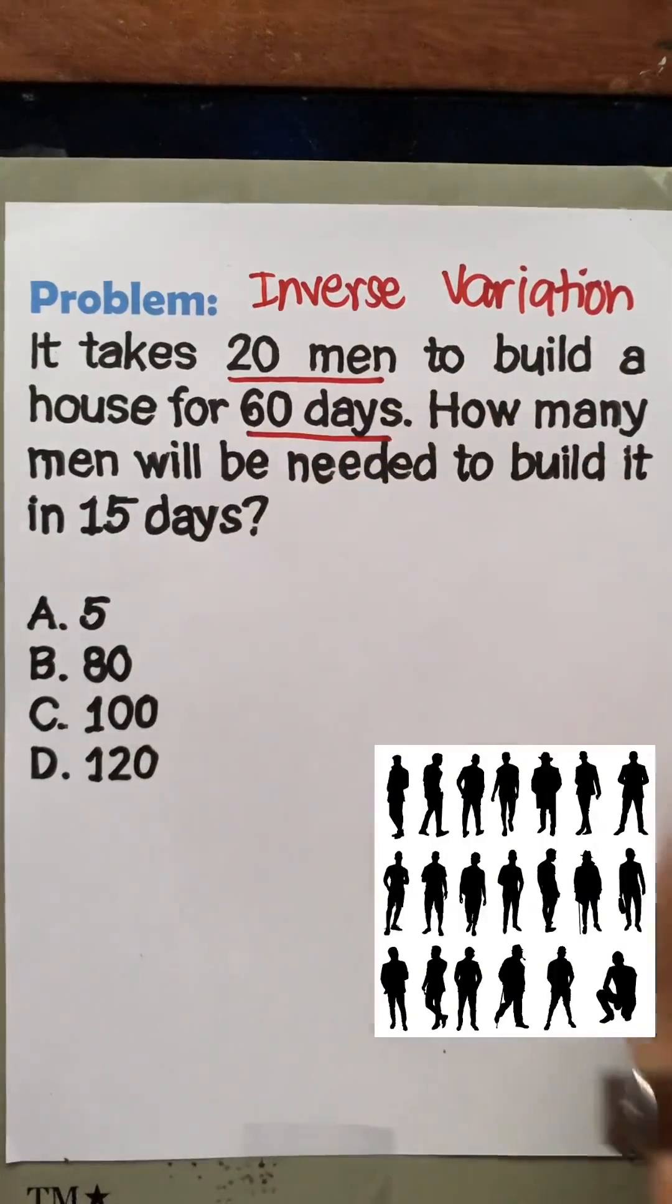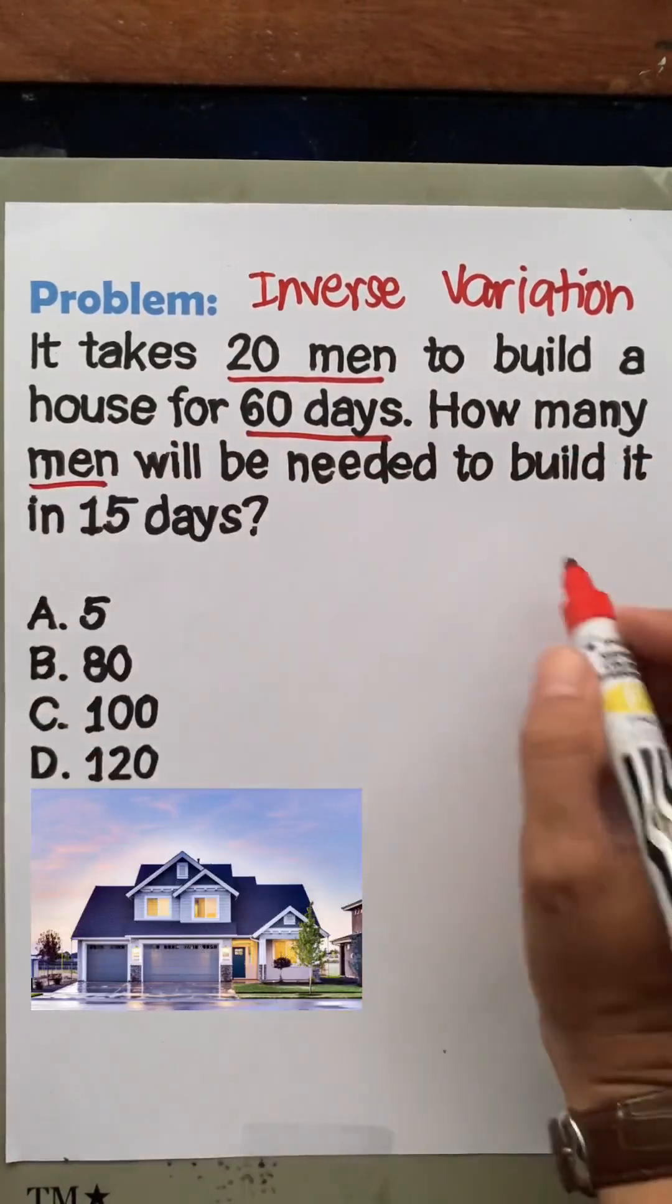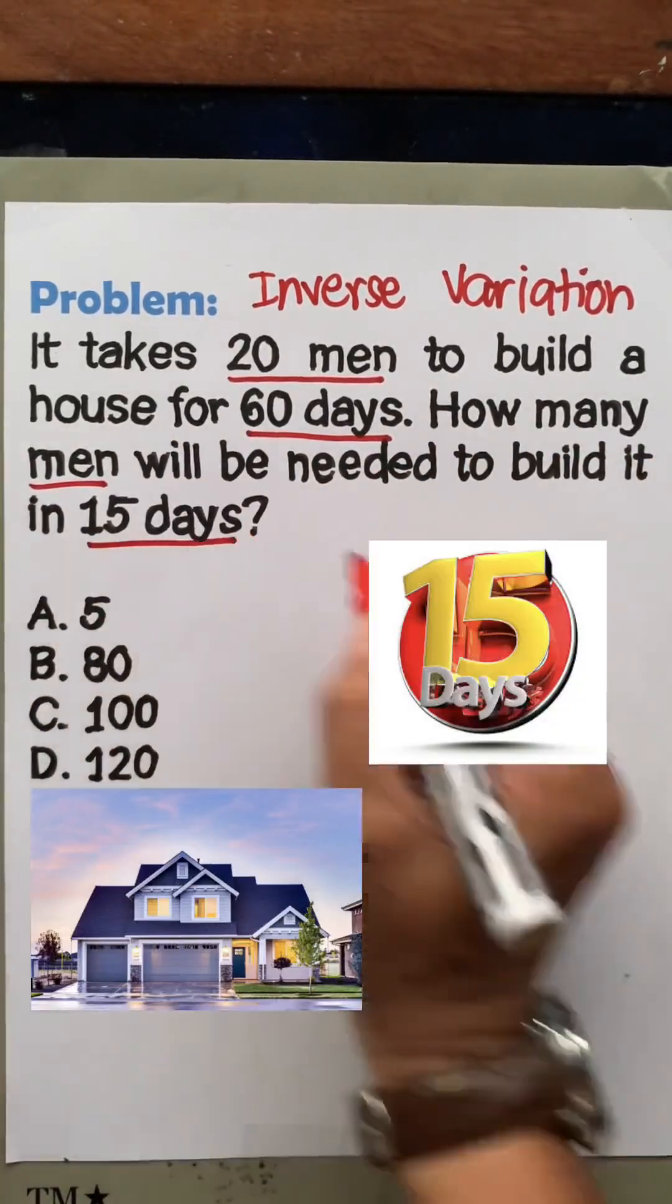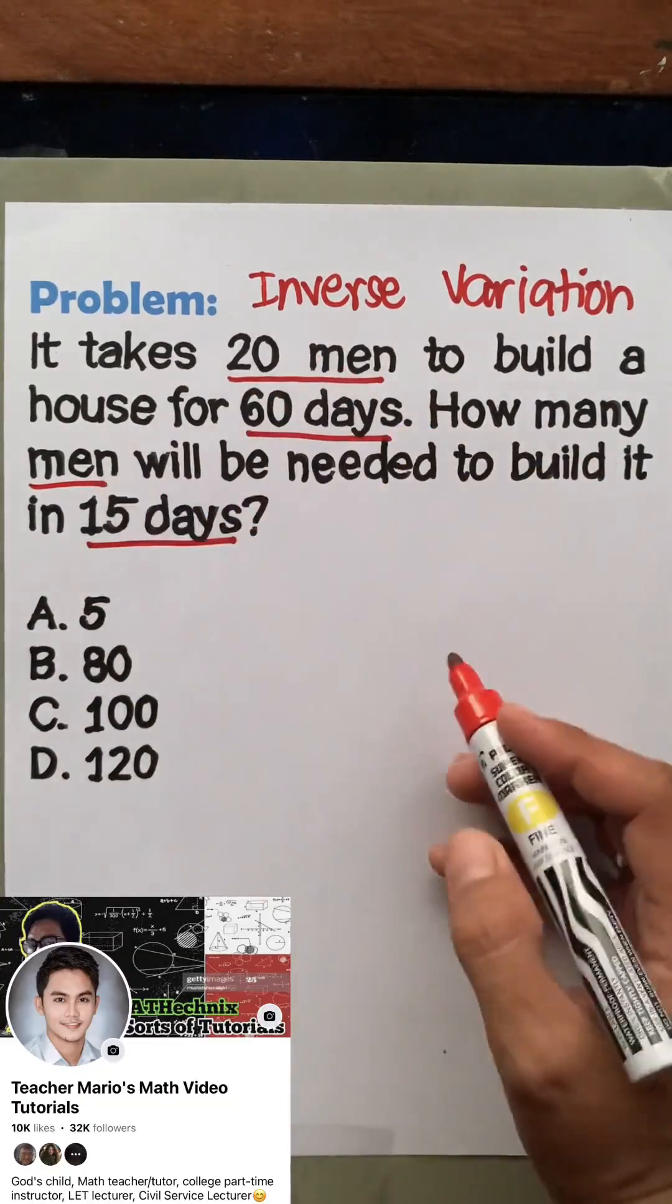...that is needed to build the house for 60 days. Now what we're going to find is the number of men to build it in 15 days. So from 60 days it becomes 15 days - how many men will be needed to finish the house in just 15 days?